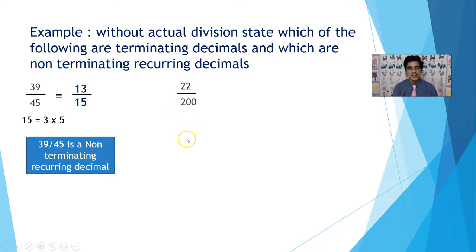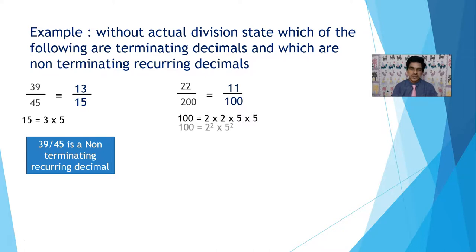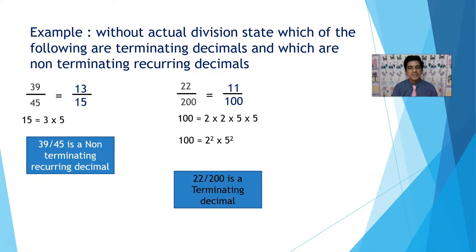Take the example 22 by 200. The common factor of 22 and 200 is 2, so it becomes 11 by 100. Now observe the denominator: 100 prime factors are 2 into 2 into 5 into 5, which is 2 squared into 5 squared. Since it is of the form 2 power n into 5 power m, we can say that 22 by 200 is a terminating decimal.